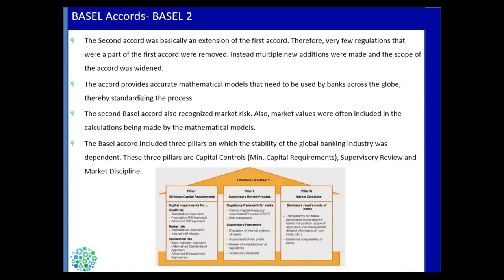To increase scope and make it more robust, Basel 2 also provided exact and accurate mathematical models that banks across the globe need to use. Any bank implementing Basel solutions now has to follow similar methodology when calculating expected losses. This helped standardize the process and reduced the possibility of banks finding loopholes by using different processes to manipulate their reported risk exposure.